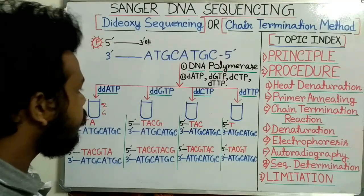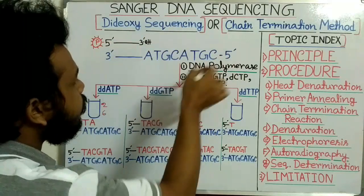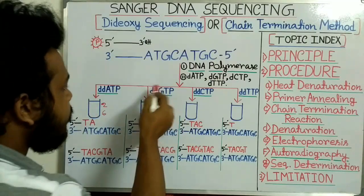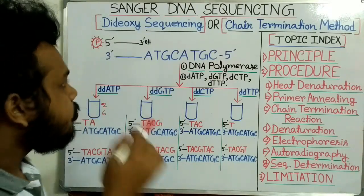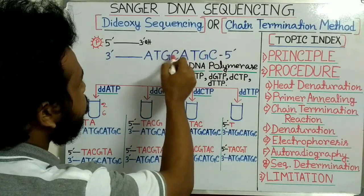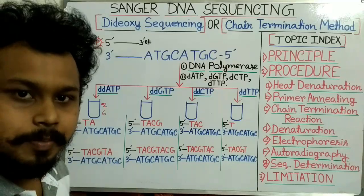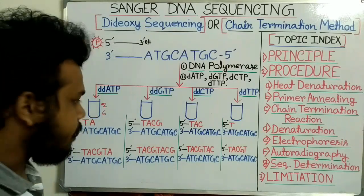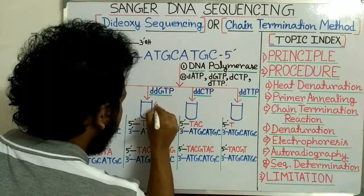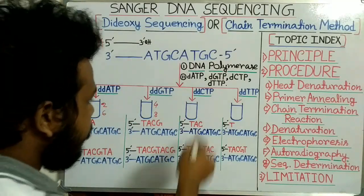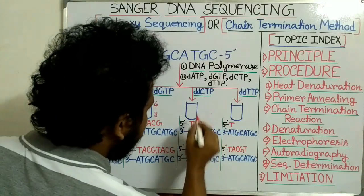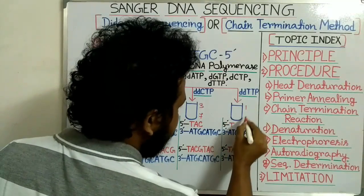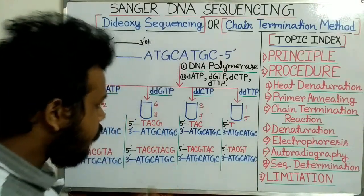In the next tube, we add all components for polymerization plus only dideoxy GTP (ddGTP), which complementarily binds with cytosine. Cytosine is present at the fourth and eighth positions, so we get a four-nucleotide fragment and an eight-nucleotide fragment. Similarly, the ddCTP tube produces a three-nucleotide fragment and a seven-nucleotide fragment, and the ddTTP tube produces a one-nucleotide fragment and a five-nucleotide fragment.